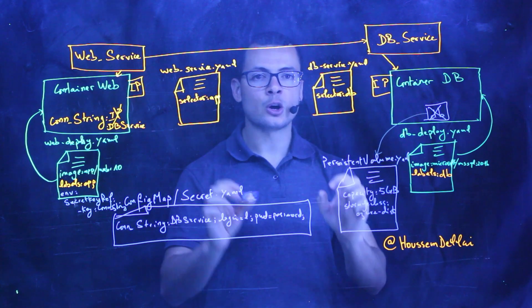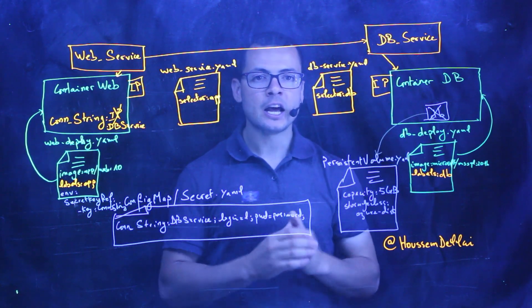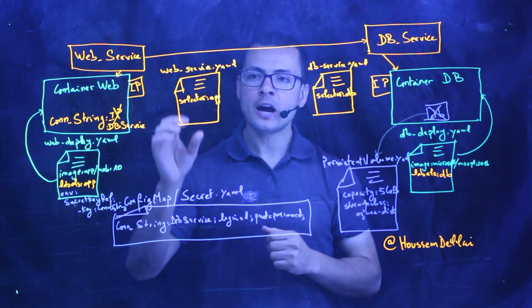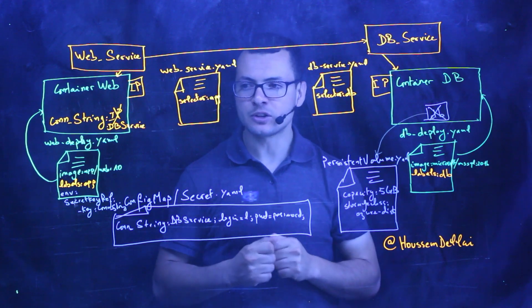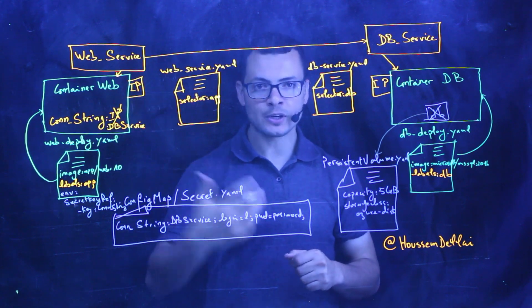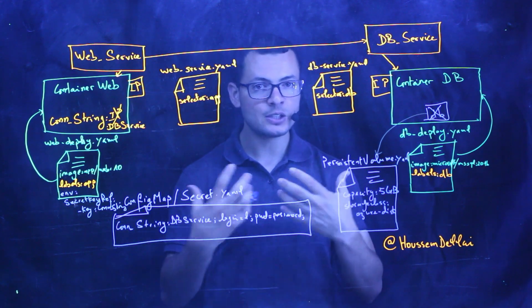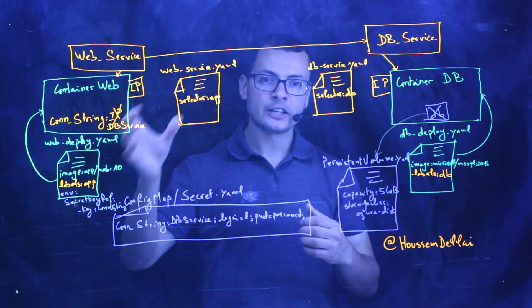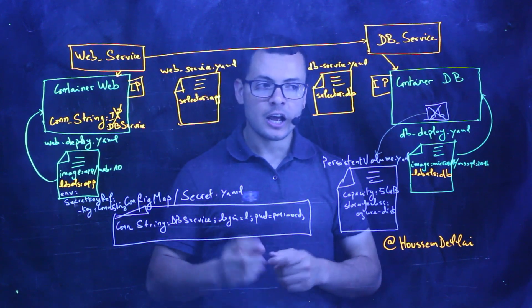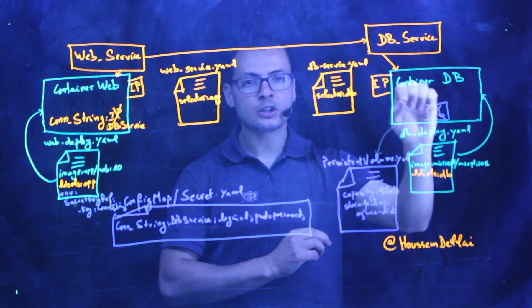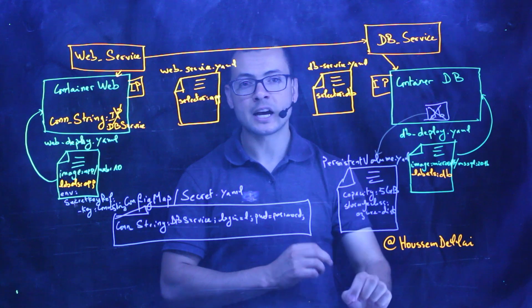We'll take the use case of a web application that connects to a database, and we'll try to map this application into Kubernetes objects. We'll have different problems when we try to map this application. First, to save the connection string which contains the database login and password — considered as sensitive data — we need to use a key-value secret management tool inside Kubernetes. Then, in order to deploy the database file, this file should not live inside the container itself, but inside a persistent volume.